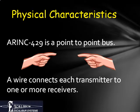Unlike most modern buses such as Ethernet, FireWire, and others in which users are connected to hubs or switches rather than directly to each other, ARINC 429 equipment must have a direct connection from each transmitting device to one or more receivers.